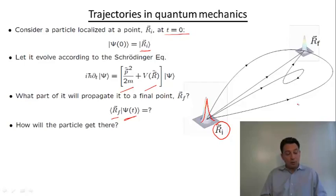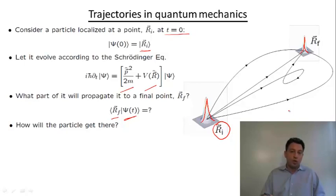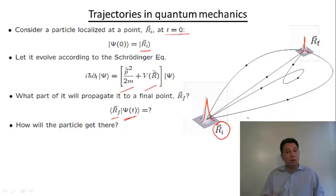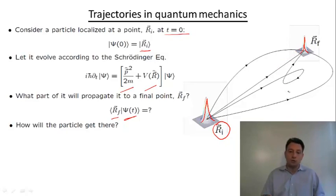Another question we may ask is how will the particle get there — how will it go from the initial point to this final point? Strictly speaking, this question doesn't really make sense in standard quantum theory based on the Schrodinger equation, because there is really no notion of trajectory, which would imply the ability to measure momentum and coordinate at the same time. But as we will see in Feynman's formulation, this question acquires a meaning — what we're going to find is that the particle goes from the initial point to the final point following all possible trajectories we can possibly imagine. Here are a few of those trajectories that I plot.